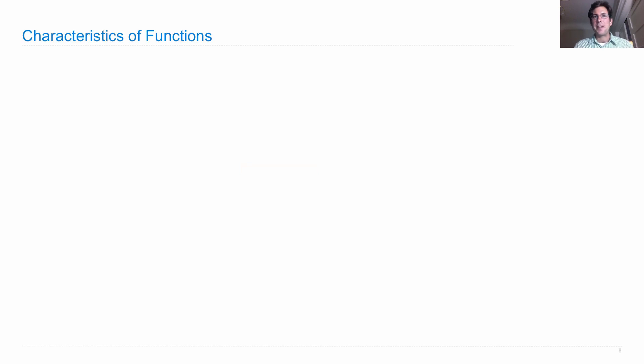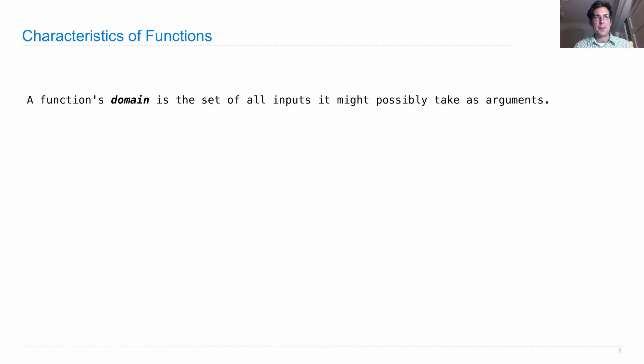Characteristics of functions can help us describe what sort of function we're going to define. A function's domain is the set of all inputs it might possibly take as arguments. A function's range is the set of output values it might possibly return.